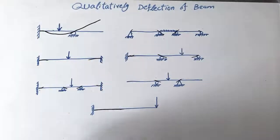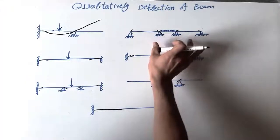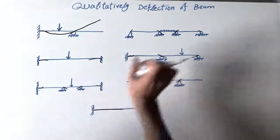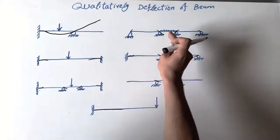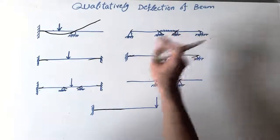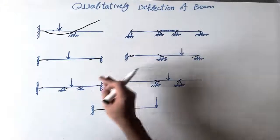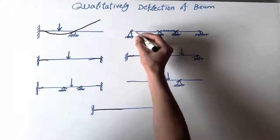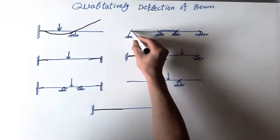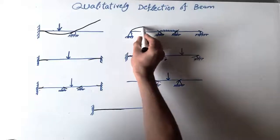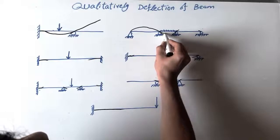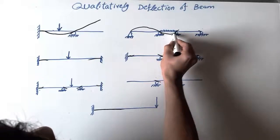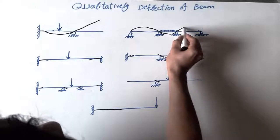Now we have a second beam with two roller supports in the middle of the beam and a UDL load — we don't know how much load per meter. How would the deflection shape look? It's going to go up, then down, making a slight slope down, then up, and then down again.